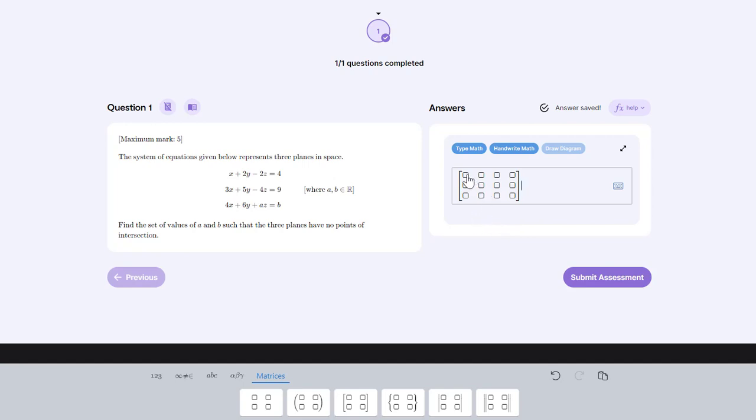Now I can just use my keyboard to enter in my coefficients so in the top row I would have 1, 2, -2, and 4. In the second row I would have 3, 5, -4, and 9, and in the third row I have 4, 6, a, and b. That's just showing using the online keyboard how we can create a matrix and how we can increase or decrease the number of columns and the number of rows and enter our elements.